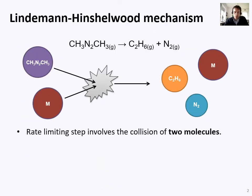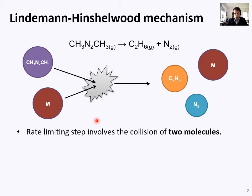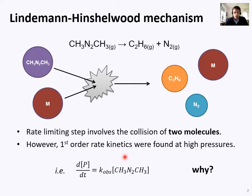So what are we talking about when we're talking about unimolecular reactions? We're talking about this kind of thing: CH3N2CH3 breaks up into its two component parts. The funny thing is that the rate-limiting step involves the collision of two molecules — one of our reactant species and also another molecule M. M just stands for molecule, and that leads to the products. At high pressures you tend to see first order rate kinetics, while at low pressures you tend to see second order rate kinetics, and the first thing we're going to do is look at why that is.